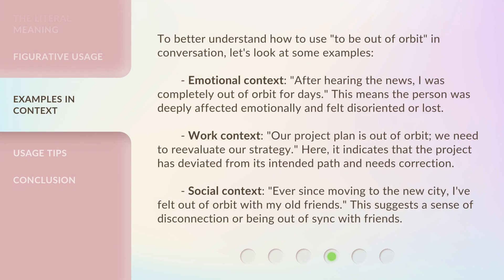To better understand how to use 'to be out of orbit' in conversation, let's look at some examples. Emotional context: 'After hearing the news, I was completely out of orbit for days.' This means the person was deeply affected emotionally and felt disoriented or lost. Work context: 'Our project plan is out of orbit — we need to re-evaluate our strategy.' This indicates the project has deviated from its intended path and needs correction. Social context: 'Ever since moving to the new city, I felt out of orbit with my old friends.' This suggests a sense of disconnection or being out of sync with friends.